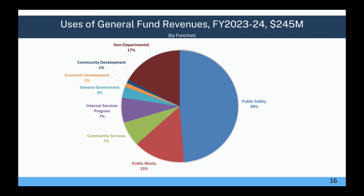The next pie chart shows uses by function — the same $245 million but by department. 49% is for public safety, 15% for public works, 7% for community services, 7% for internal services programs, 3% for general government, 1% for economic development, 1% for community development, and 17% for non-departmental, which includes transfers out.